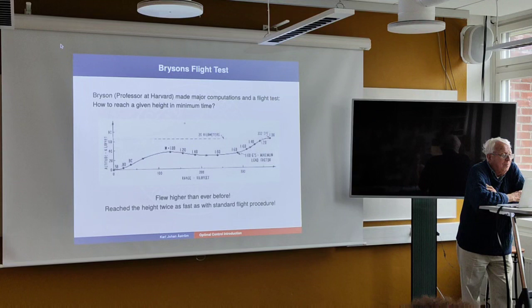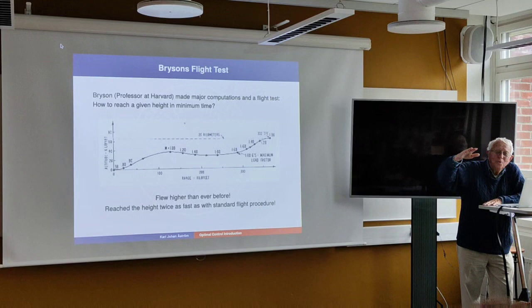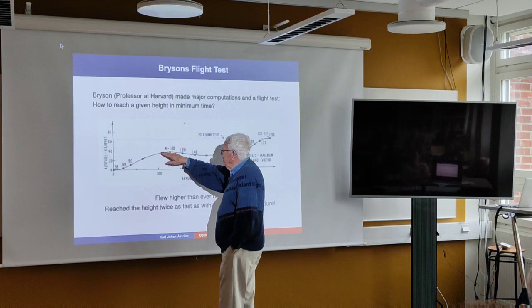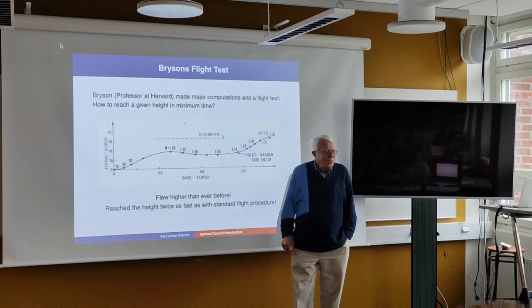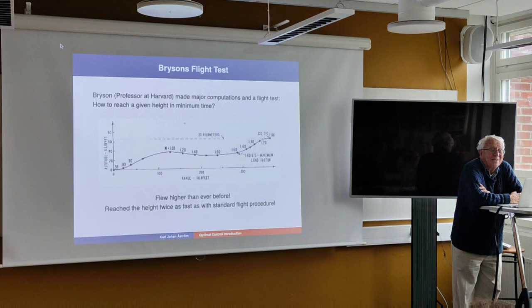Here's one example. Bryson was a professor at Harvard and wanted to demonstrate the power of optimal control. He took an aircraft that had never flown higher than about 15-18 kilometers, then calculated how to guide it to get as high as possible. He flew higher than ever done before. The trajectory: you start gradually, go up into a region where the engine is very efficient, then accelerate and accumulate a lot of energy, then race upward. They had guys sitting with tables next to the pilot, and demonstrated the pilot could fly much higher than ever before. It was quite a convincing demonstration of optimal control.